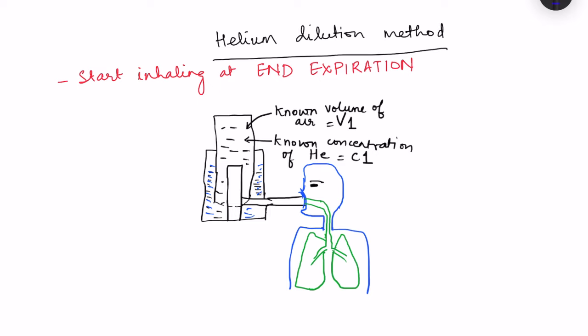In the helium dilution method, a spirometer is filled with a known concentration of helium — we call it concentration C1. The volume of the spirometer is also known; normally it is 9 liters, so that is V1. We connect the person to the spirometer and ask them to start inhaling from the spirometer at end expiration — meaning when the volume of the lungs is equal to the functional residual capacity.